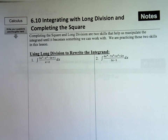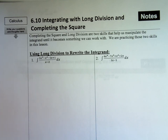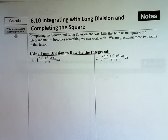All right, kids, this is the last significant section of Unit 6, Section 610: Integrating with Long Division and Completing the Square. These are methods and tactics that you learned back in Algebra 2 and Pre-Calc. We're going to be resurrecting some of your old applications to be able to do our integration, our calculus part. Completing the square and long division are two skills that help us manipulate the integrand until it becomes something we can work with. We're practicing those two skills in this lesson.